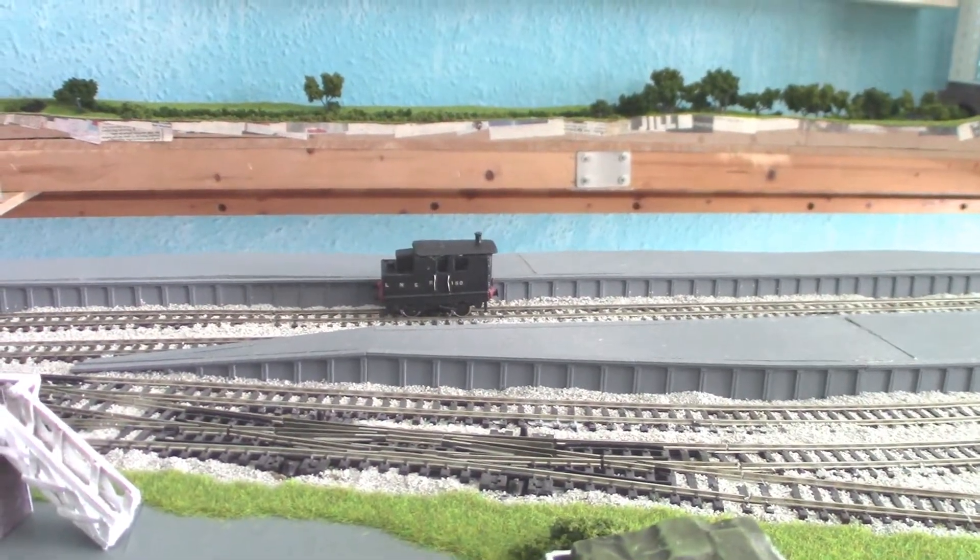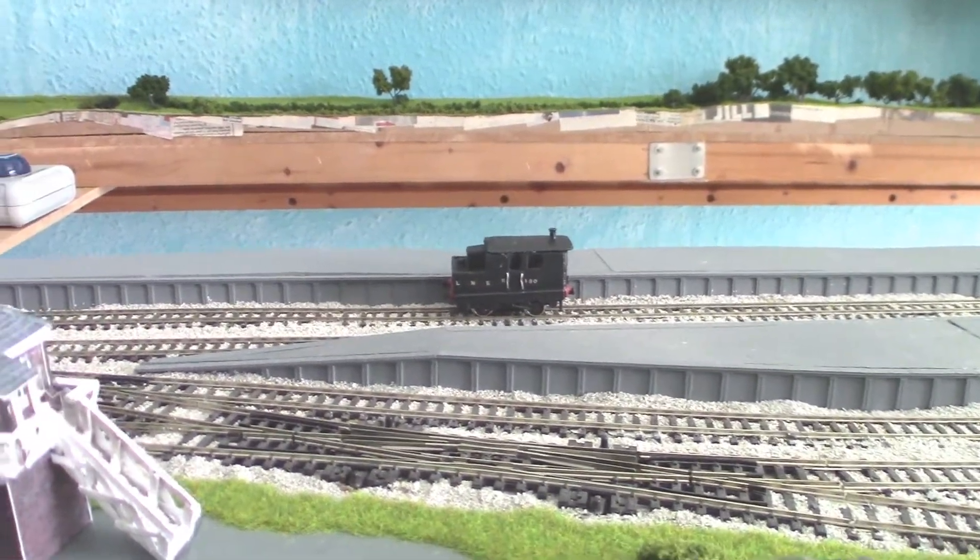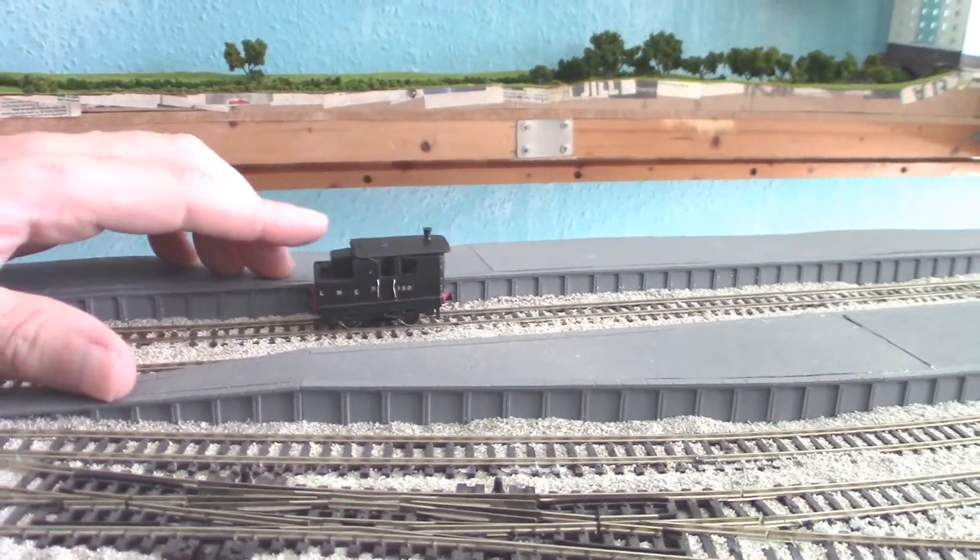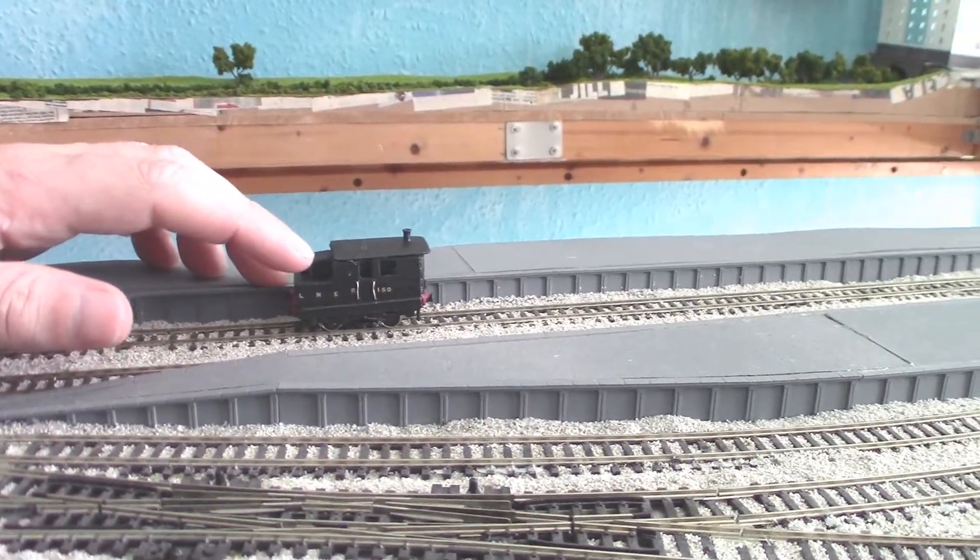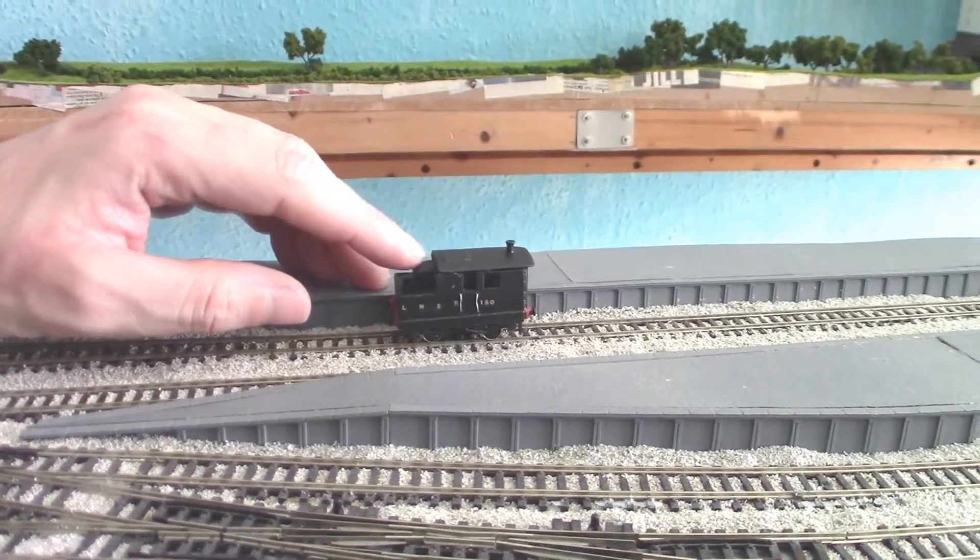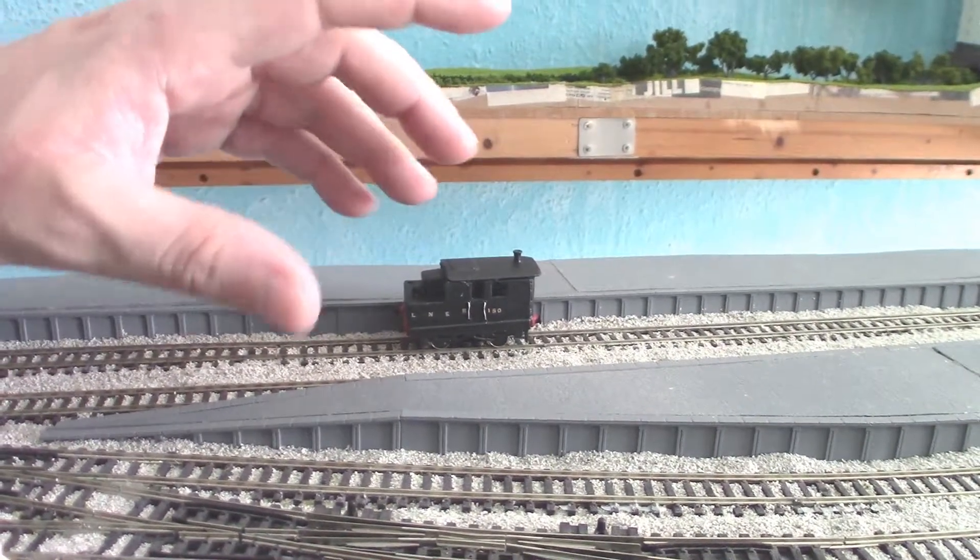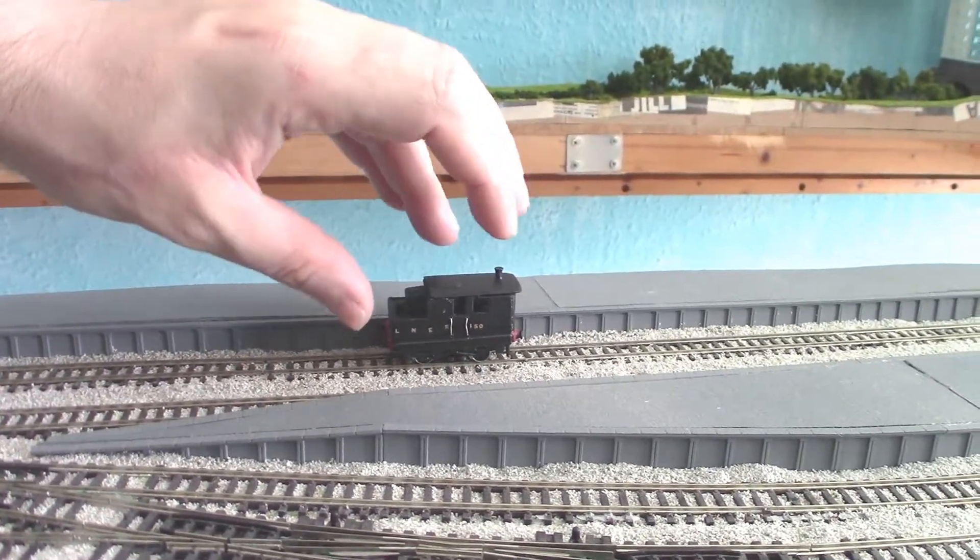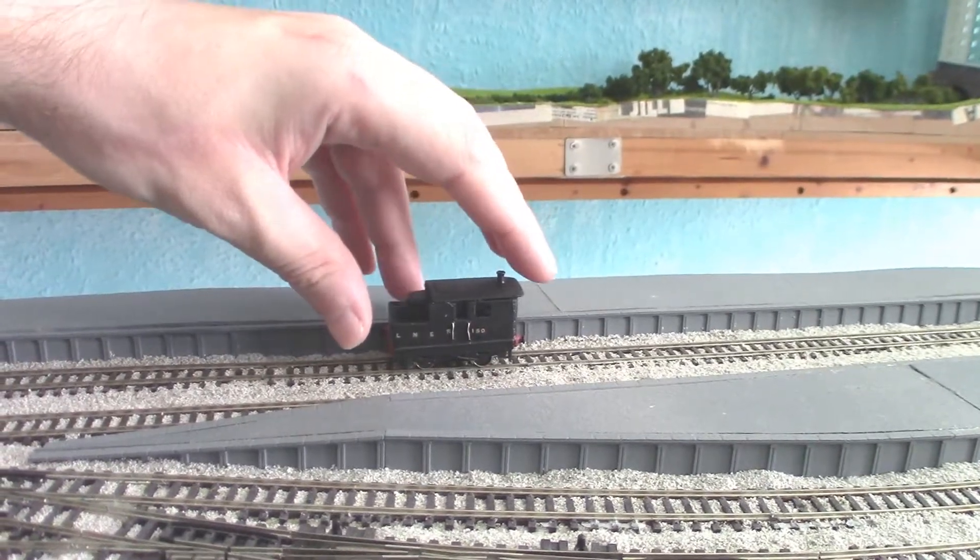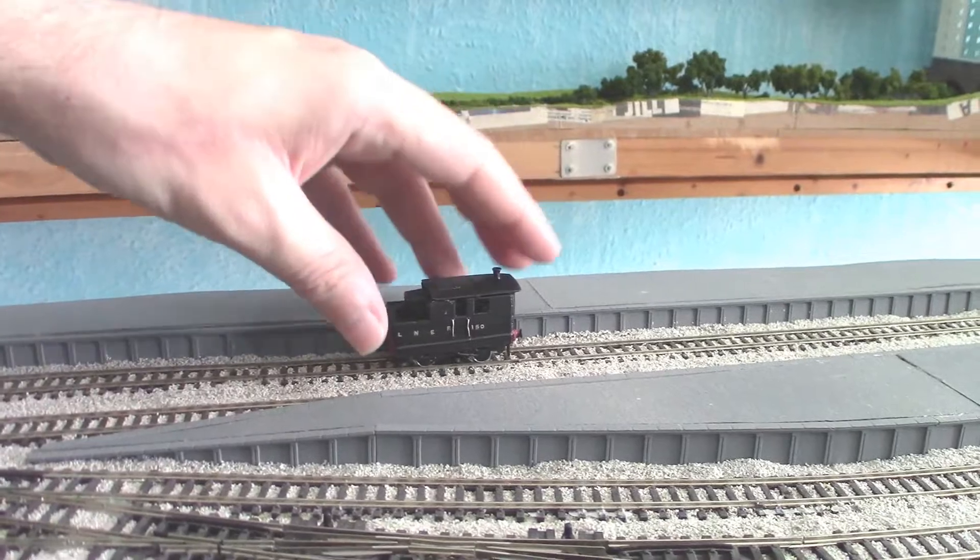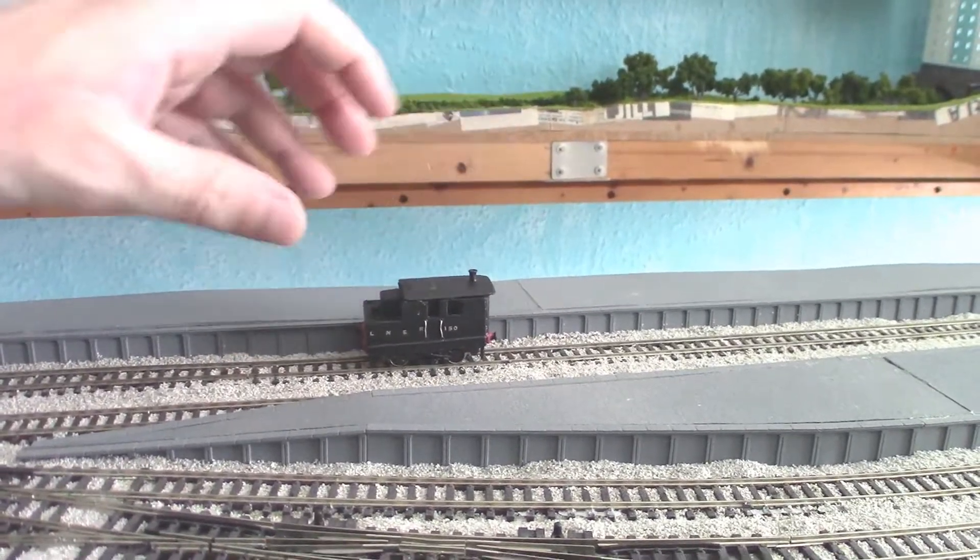Now here we are, the LNER shunter on my layout, and it's mostly complete. There are a few things which I need to finish off. First of all, I need to add coal to the outside here. I also need to mention that this box on the back here is not prototypical, but it's a design compromise to fit the chassis into the model itself, because this chassis is actually a fairly big thing for this little model.